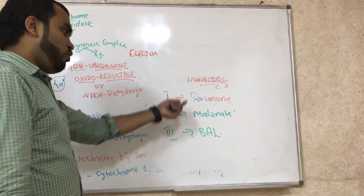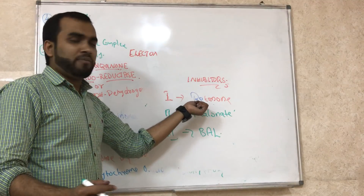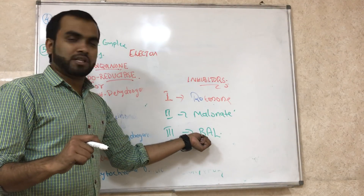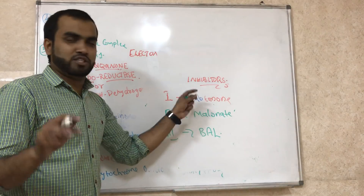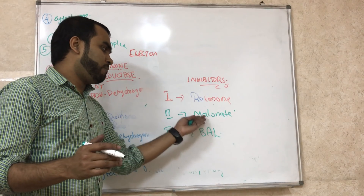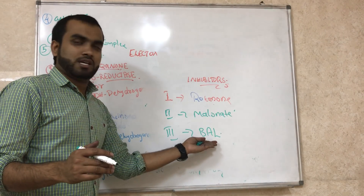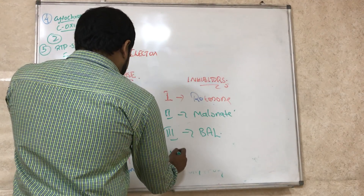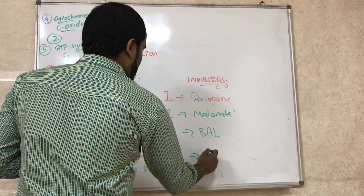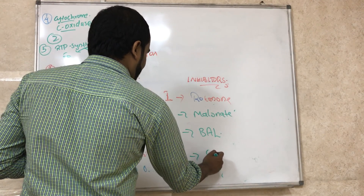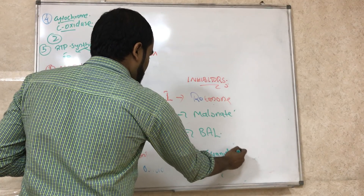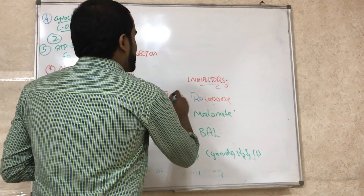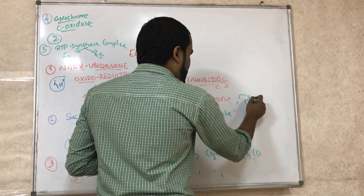Complex III is inhibited by a substance called BAL. A Hindi mnemonic to remember: 'Ro mat, beta/bacha' — meaning don't cry, big boy — representing inhibitors for complexes 1, 2, and 3. Complex IV is inhibited by cyanide, hydrogen sulfide, and carbon monoxide. Complex I is also inhibited by phenobarbital.